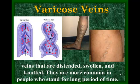Varicose veins are swollen, distended, and knotted veins, common in people who stand for long periods or are severely overweight. The diagram shows the flap-like tissue valves inside veins that push blood upward. In varicose veins, the veins are so swollen the flaps can't hold their shape, blood can flow backwards, and surgery may be needed because of complications from blood flow.